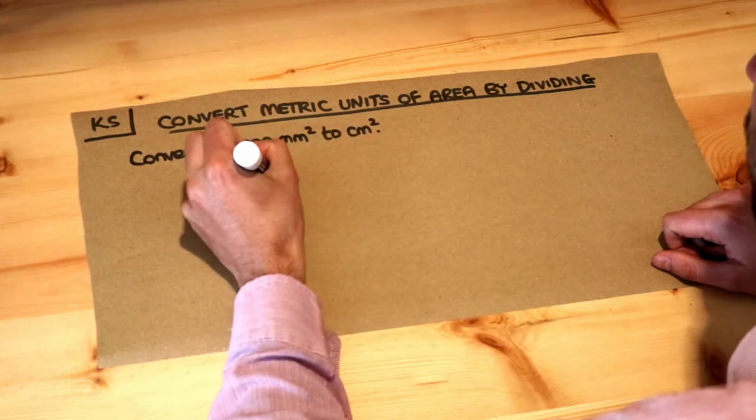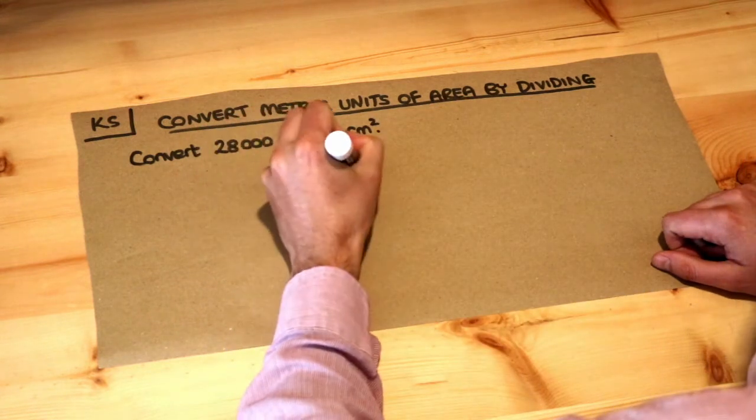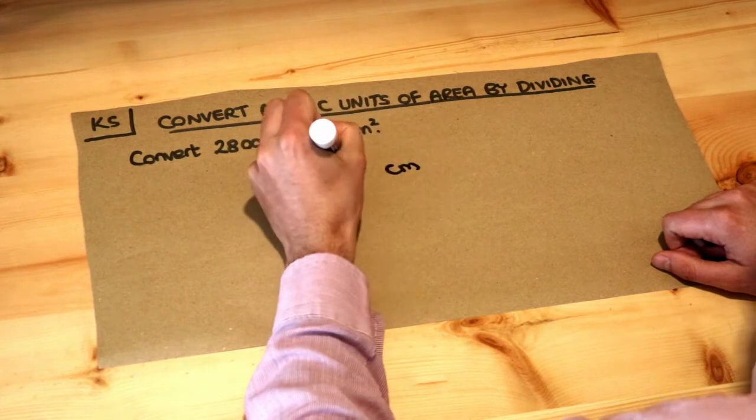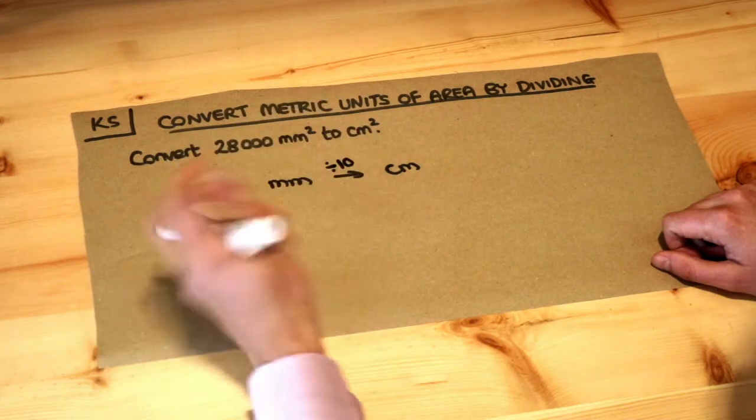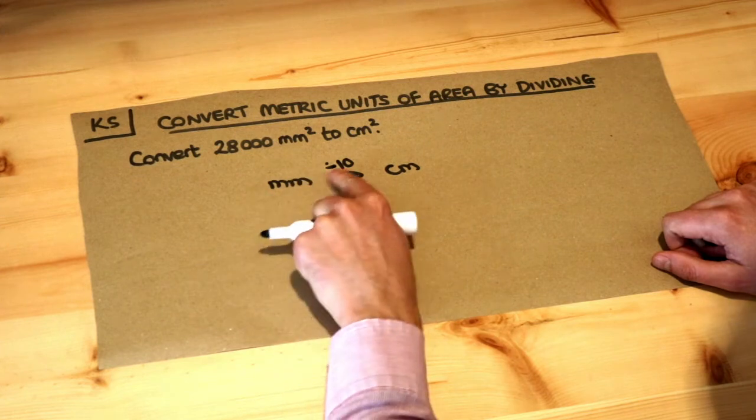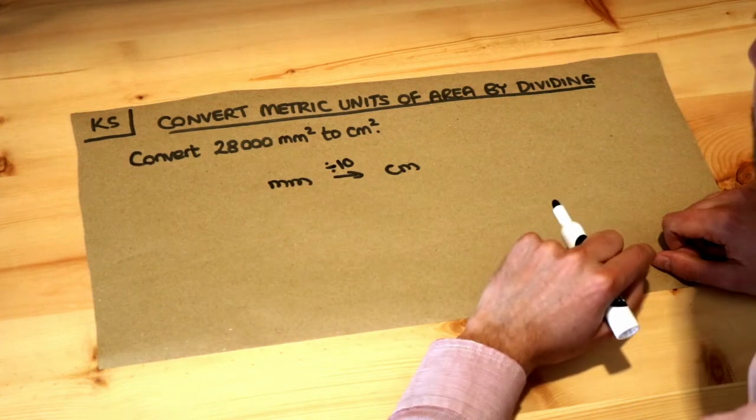We know if we're going from millimetres to centimetres, we would divide by 10. For example, if we had 10 millimetres, we'd divide by 10 to get 1 centimetre.